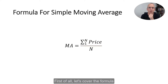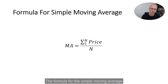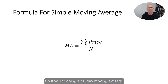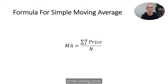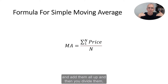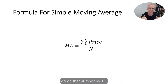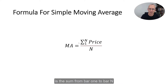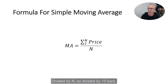First of all, let's cover the formula for the simple moving average. The formula for the simple moving average is just an arithmetic average of the last N number of bars. So if you're doing a 10-day moving average of the closing price, you take the closing price on each bar of the last 10 bars, add them all up, and then divide that number by 10. So this formula is: moving average equals the sum from bar 1 to bar N of the price, divided by N.